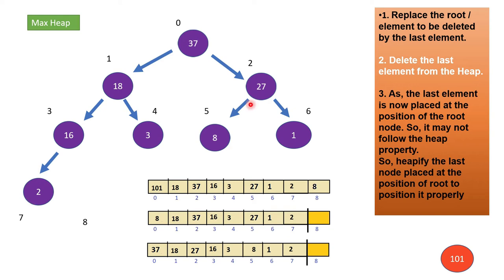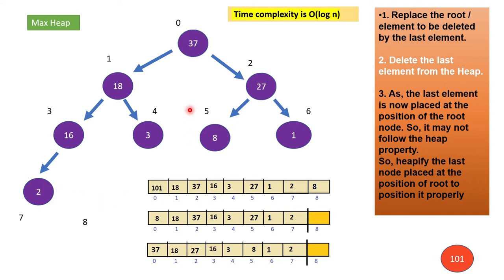So now we will discuss what is the time complexity required to delete a node. The worst case time complexity for deleting a node is O(log n). Why? Because the last node we replaced can travel at most through all levels downward. Suppose one node travels from the root to the last level — it has to traverse 3 levels down to fit into the correct position. That number of levels is log of the number of nodes, that is log n. So that's why the worst case time complexity for this delete operation is O(log n). I have also explained this beautifully in the insert heap element video.